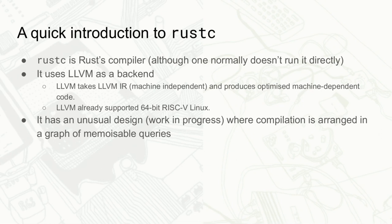The compiler backend, LLVM, takes LLVM IR — intermediate representation — which if you squint looks a bit like assembly but with unlimited registers and some amount of data typing, and importantly it's machine independent. LLVM optimizes it and produces machine code for the particular target you want. This means all the really difficult machine-dependent things are handled inside LLVM, and there isn't a huge amount of work for Rust to do to support a new target.